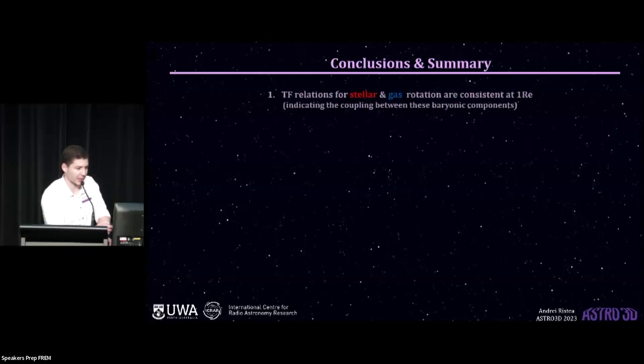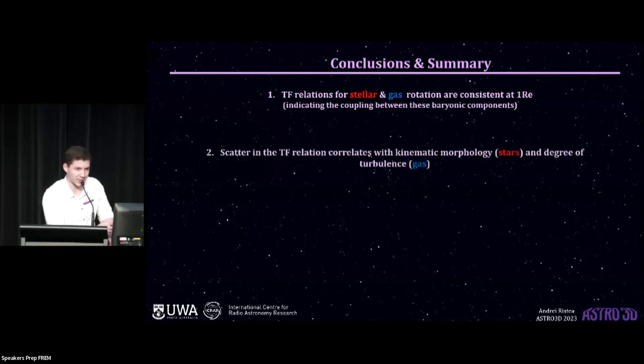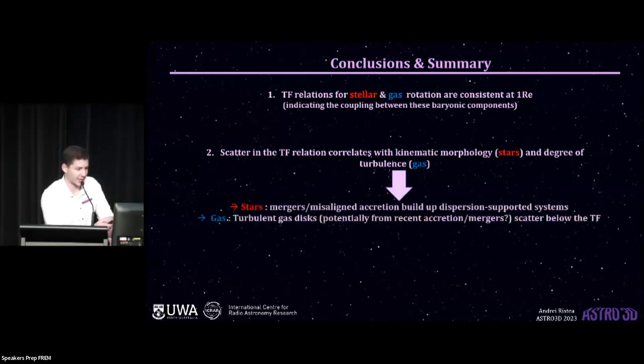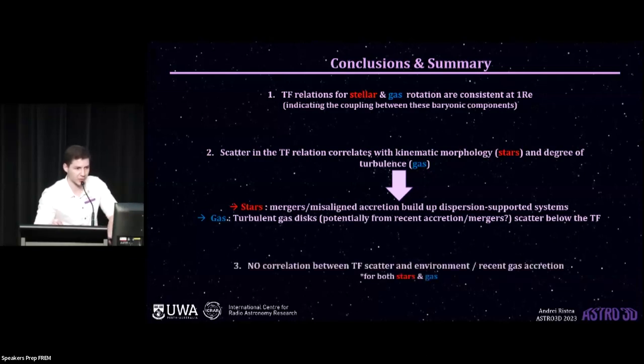So I'll just wrap up by going through our main findings. We've looked at the Tully-Fisher relation for stars and gas in the nearby universe and found that these are largely consistent at 1RE. The scatter in the Tully-Fisher correlates well only with the kinematic morphology for stars and the degree of turbulence for gas. And this points towards the processes that I mentioned in the previous slide. And interestingly, we see no correlation with tidal effects from neighboring galaxies or with signs of recent gas accretion. And I'll leave it there. Thank you very much.